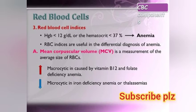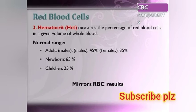CBC red blood cell indices are useful in the differential diagnosis of anemia. MCV is the measurement of the average size of RBCs. An increase in size is called macrocytic, caused by vitamin B12 and folate deficiency anemia.